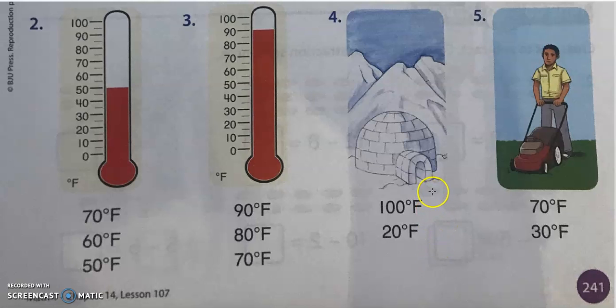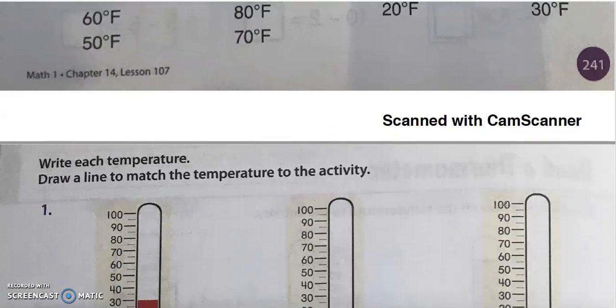Number four, oh wow, which degree do you think would match up with the picture here? It's definitely below zero degree, and so that's 20 degrees Fahrenheit. Number five, which one do you think would go with this? Yes, 70 degrees Fahrenheit. We talked about this in number one, it's about 20, 21 degrees Celsius. So it's a good weather to mow the lawn, 70 degrees Fahrenheit.